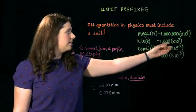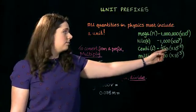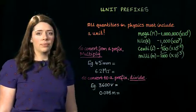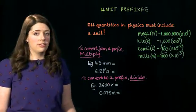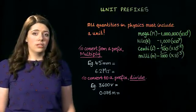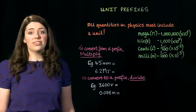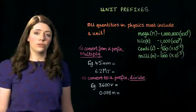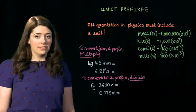We've got times ten to the six for mega, times ten to the three for kilo, times ten to the minus two for centi, and times ten to the minus three for milli. Now these are used to change the size of a unit to make them more sensible to use. For example, you wouldn't say I walked two thousand meters to school, you'd be more likely to say I walked two kilometers to school. It makes the numbers easier to handle.